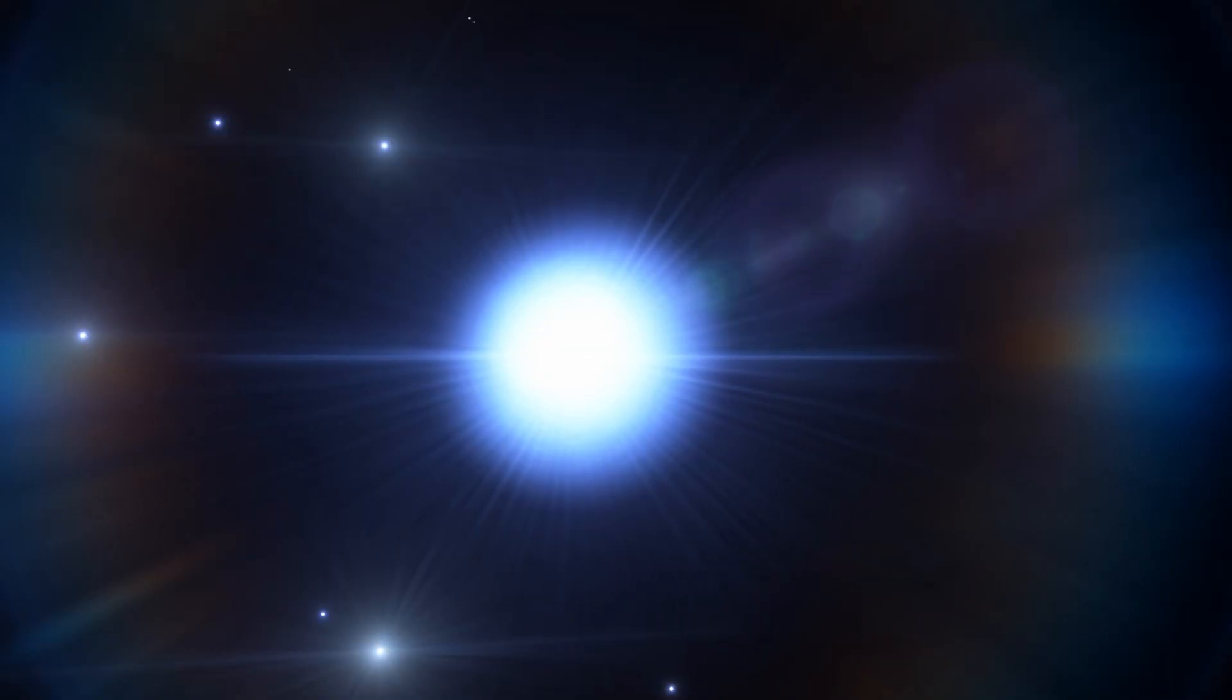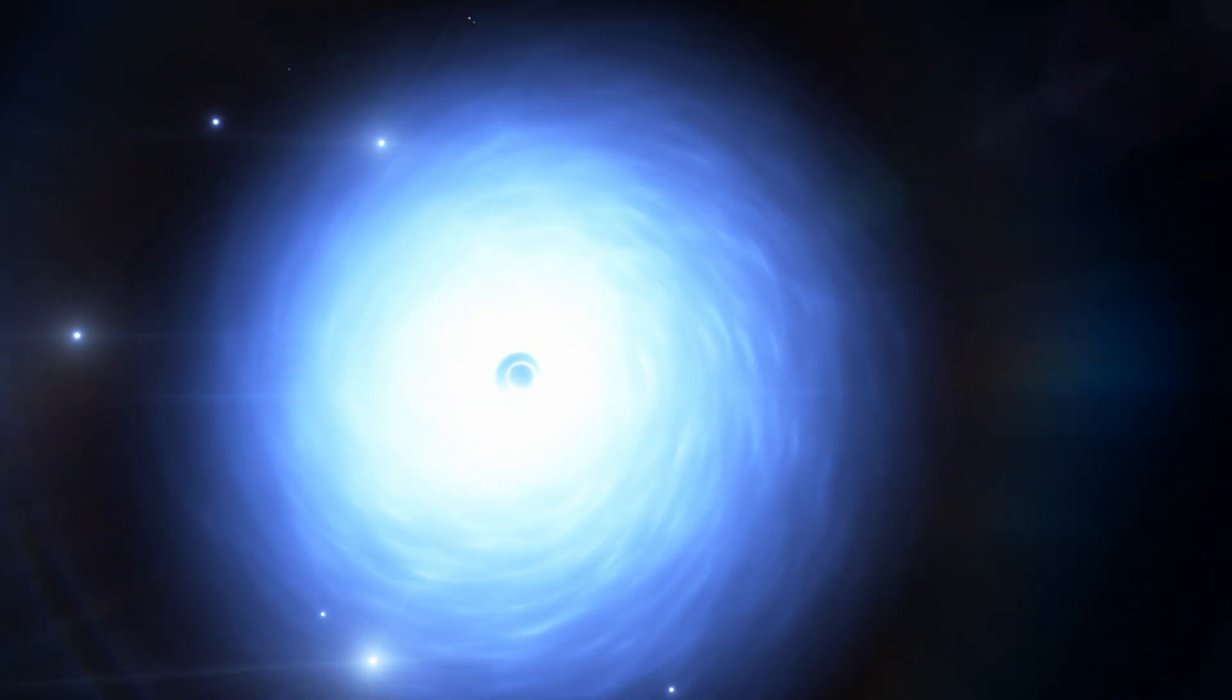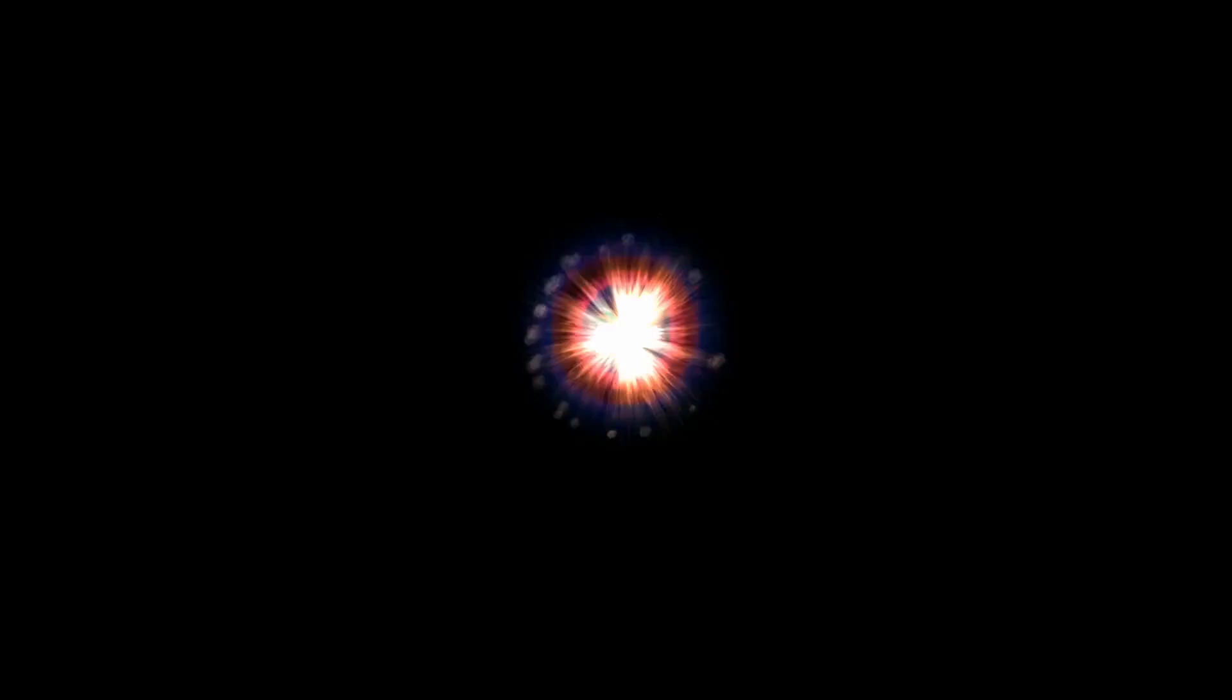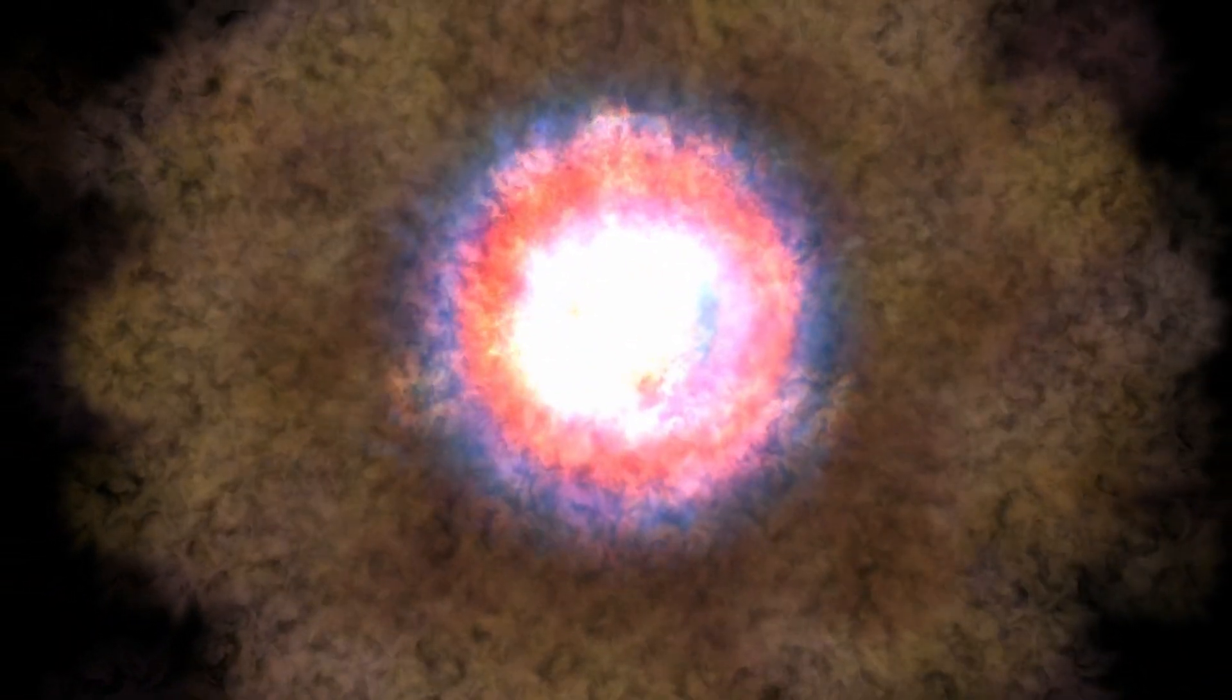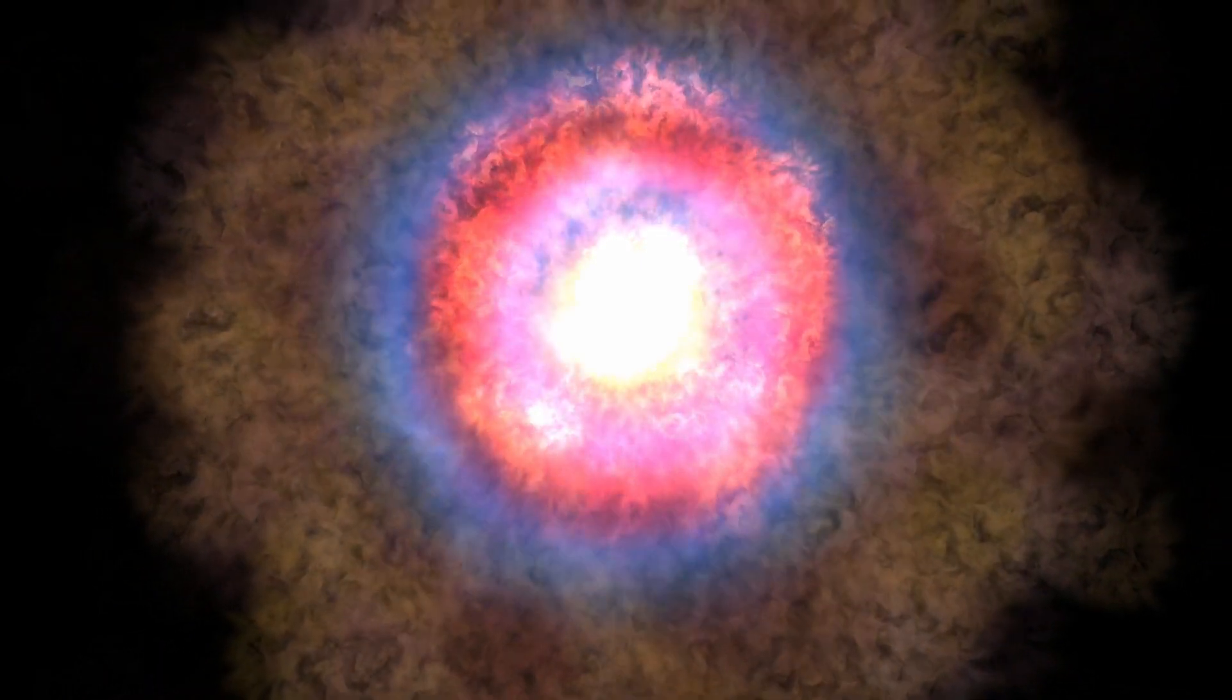There is also a very energetic supernova thought to result from extreme core collapse scenario. In this case, a massive star, about 30 solar masses, collapses to form a rotating black hole emitting twin energetic jets and surrounded by an accretion disk. It is a type of stellar explosion that ejects material with an unusually high kinetic energy. This explosion is known as a hypernova.